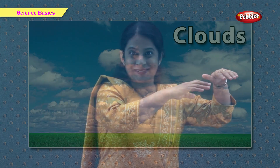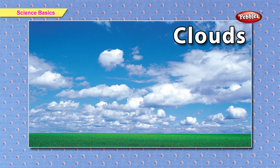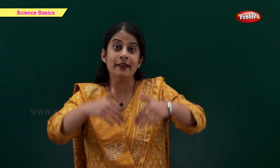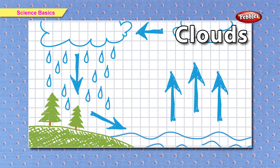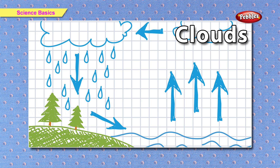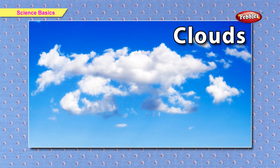A cloud is a large collection of tiny droplets of water. The droplets are so small and light that they can float in the air. How are clouds formed? When lots of small water droplets come together, they become a cloud. The clouds move with the wind.